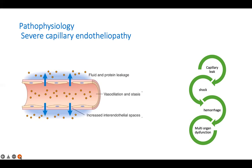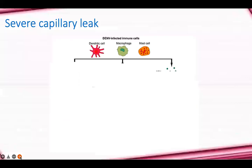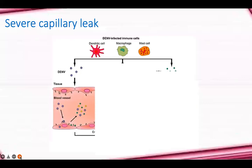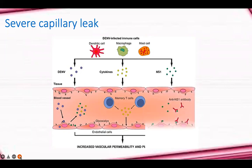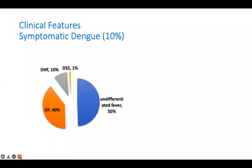Capillary endotheliopathy may be due to direct viral invasion, though that is slightly unlikely since it happens later in the disease course. It can also be due to the cytokine storm or antigen-antibody reaction causing damage to the capillary endothelium. Notably, 90% of dengue infections are asymptomatic.